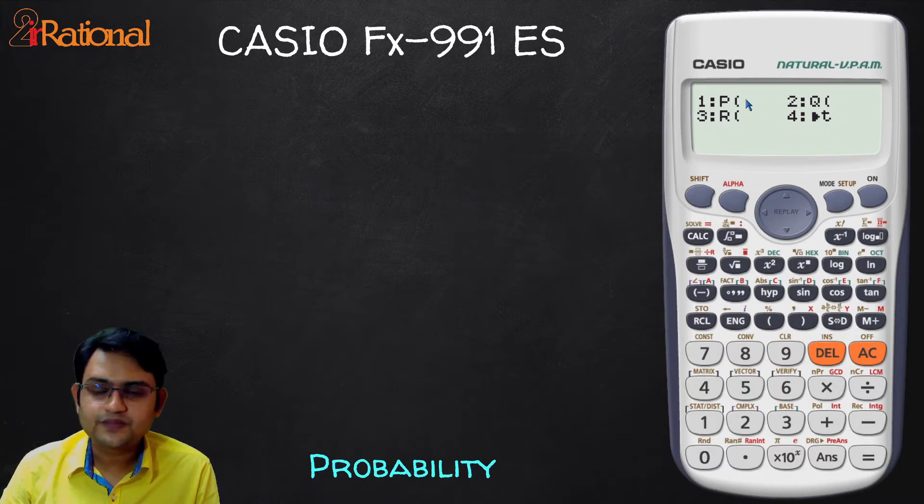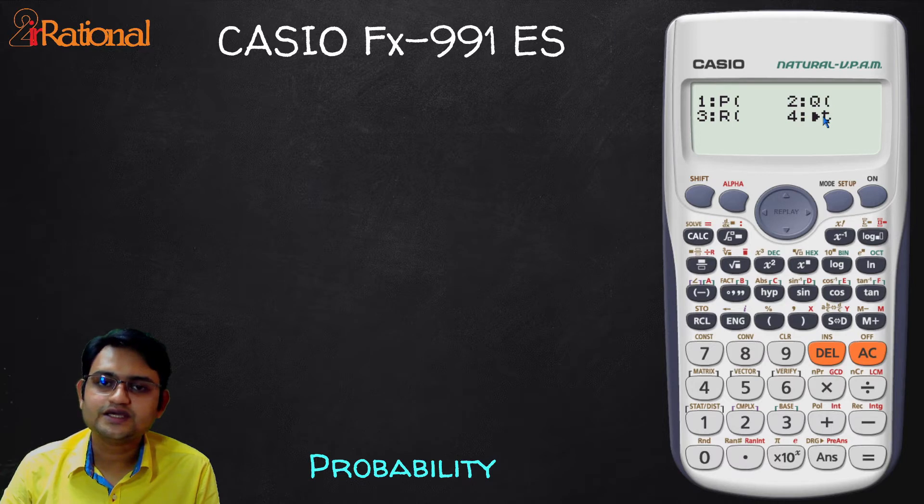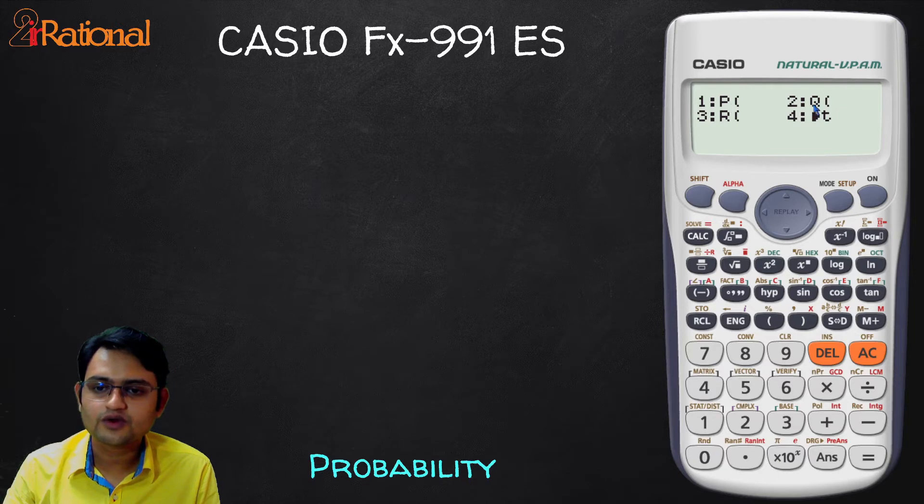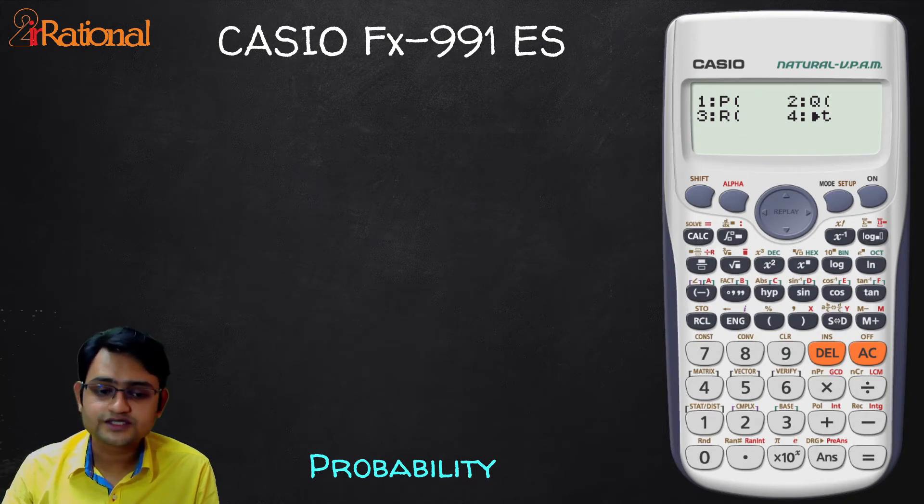Here you would see P, Q, R and this arrow t. This arrow t is basically to convert your given data into equivalent standard normal distribution. That is part of some other video. Right now we'll talk about this P, Q and R. To find probability we'll need one of these. But what are these? What is P, what is Q, what is R?